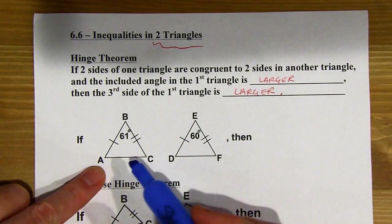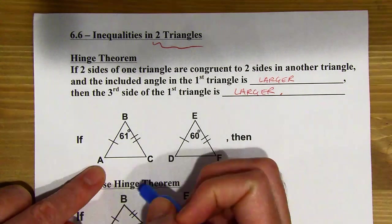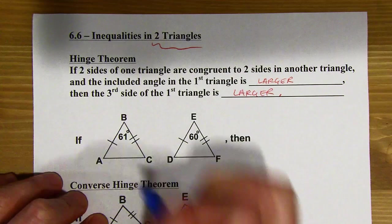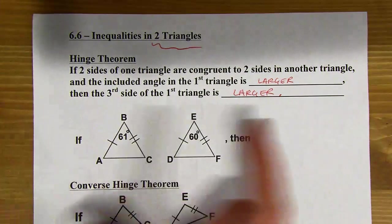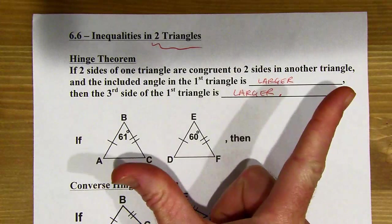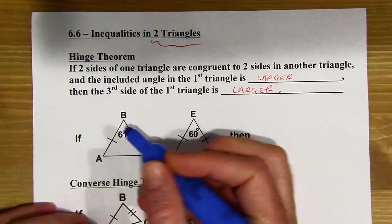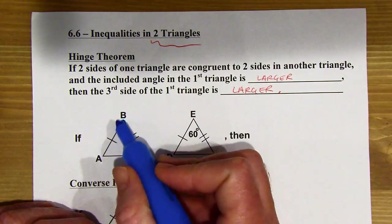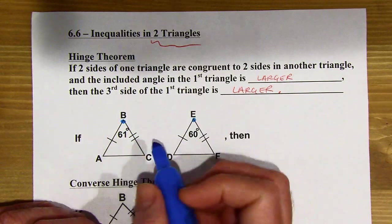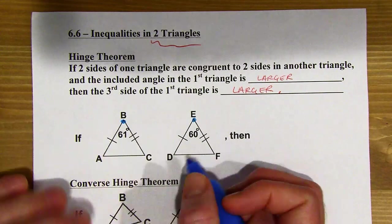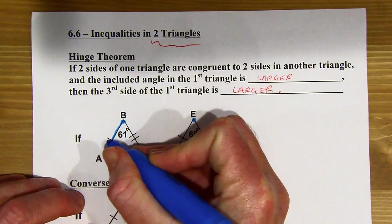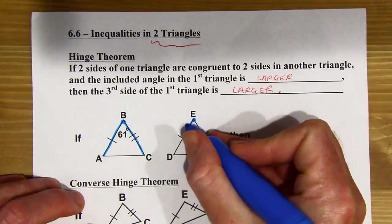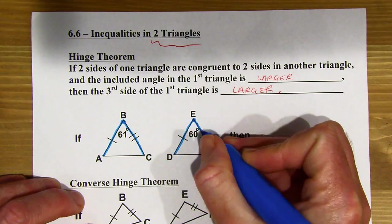but this hinge theorem is actually a lot simpler when we look at it in use. So I'm going to try to re-explain this just with this picture. So we need to have this SS situation. So think of a hinge on a door, right? A hinge that opens and closes a door. So your hinge is always going to be where the two marked sides, the two sets of congruent sides meet. So this is my hinge in the first one, and this is the hinge in the second one.